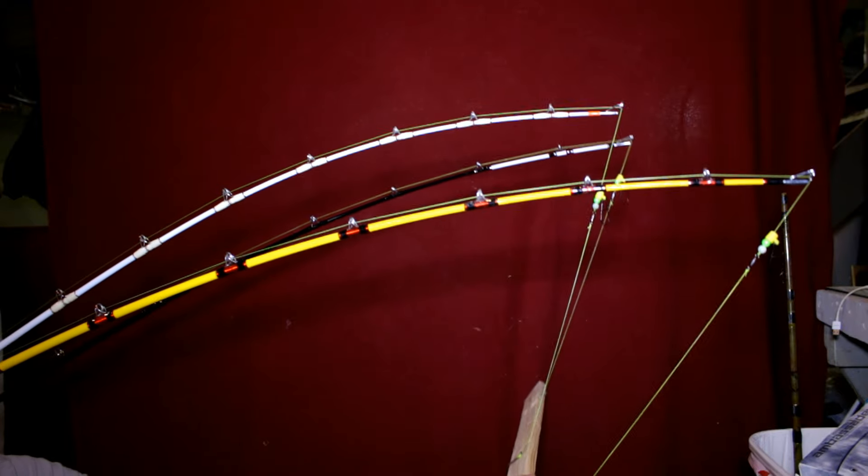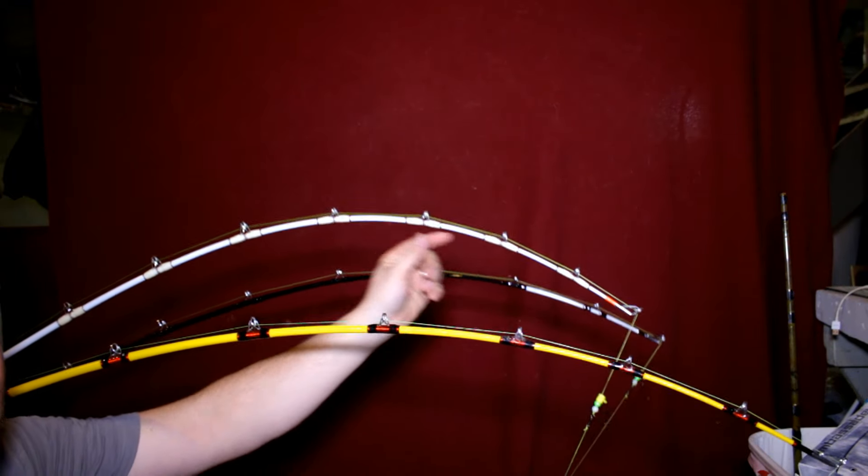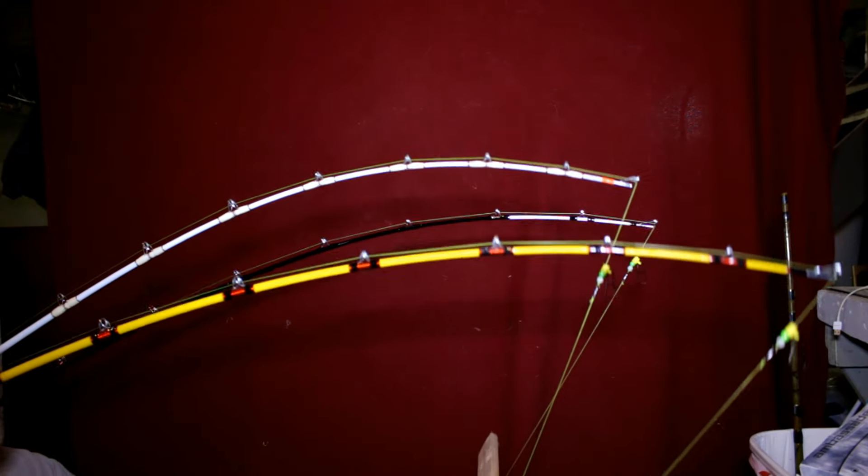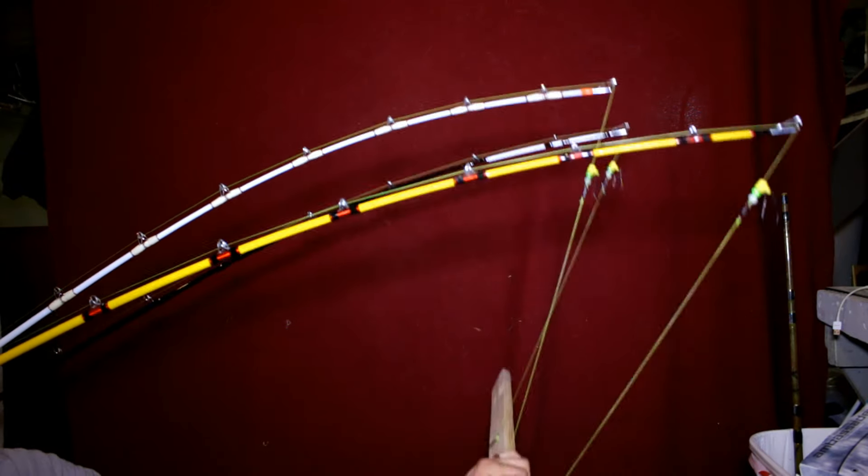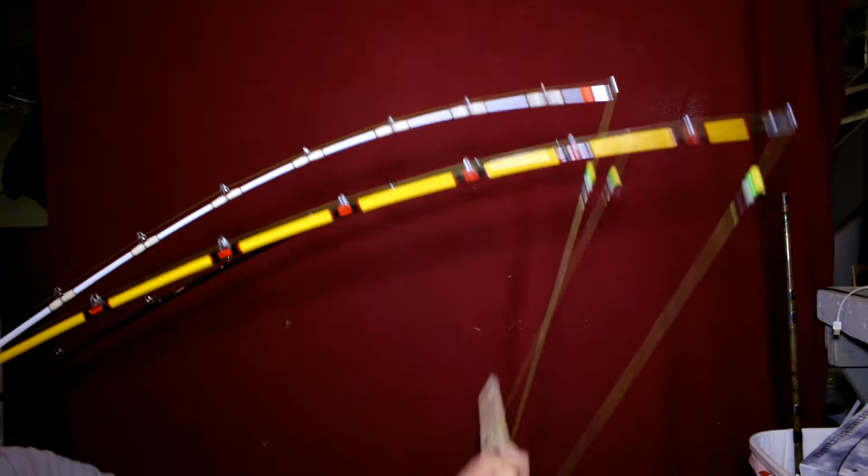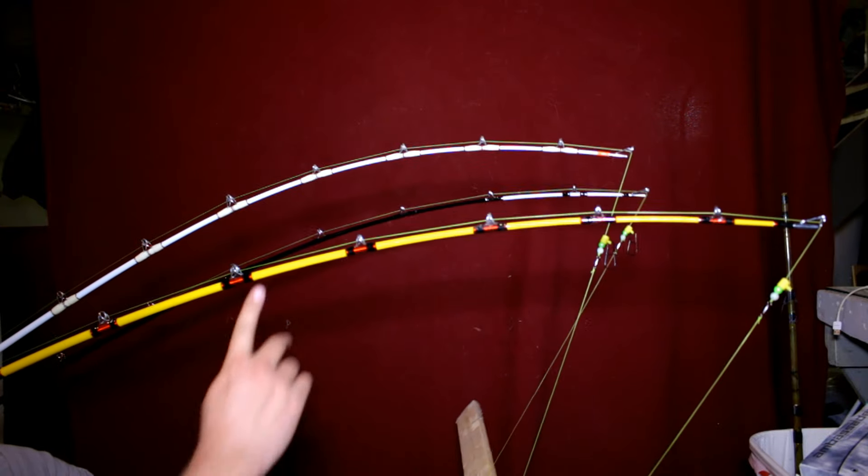Now if you'll notice, the Battle Cat has quite the bend here. I use it for live bait a lot because it does have a fast tip - I can see my bait moving a lot better.